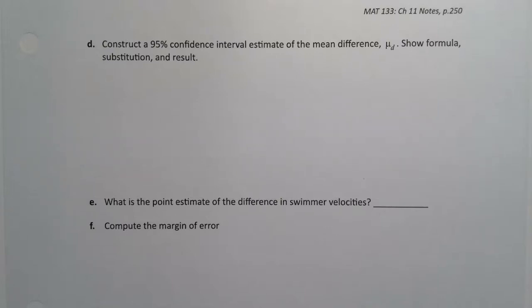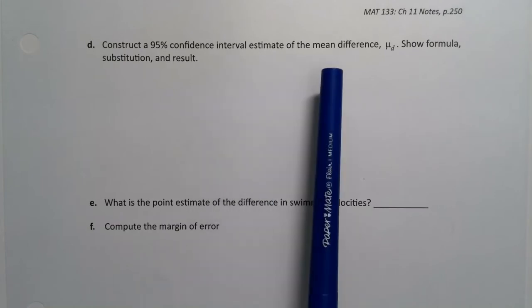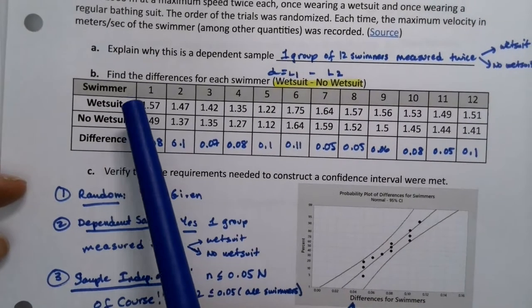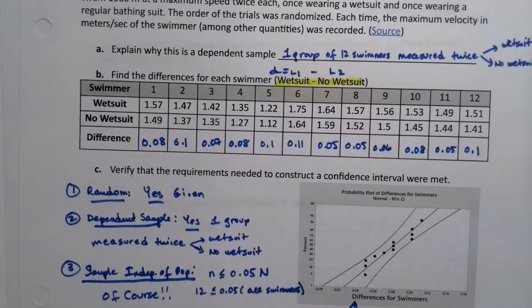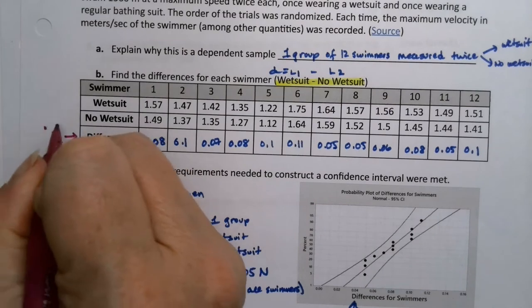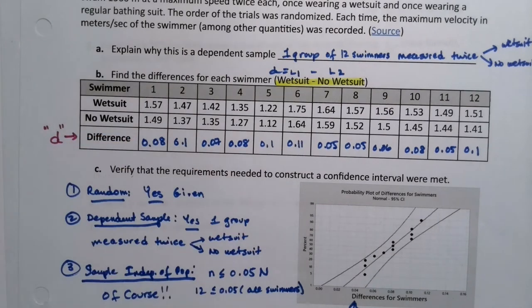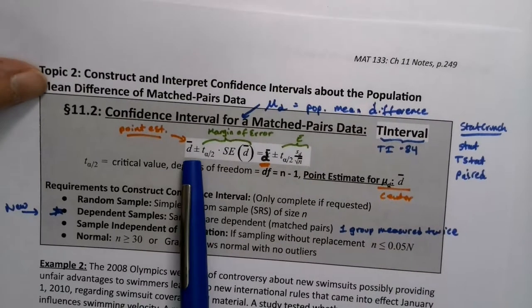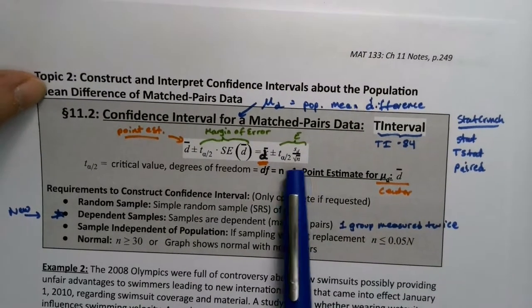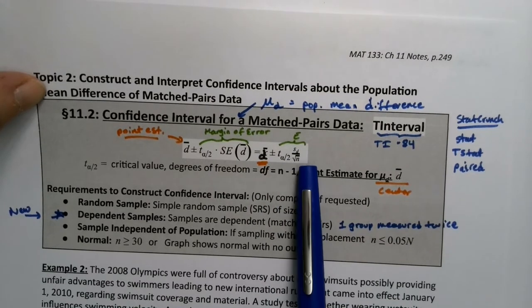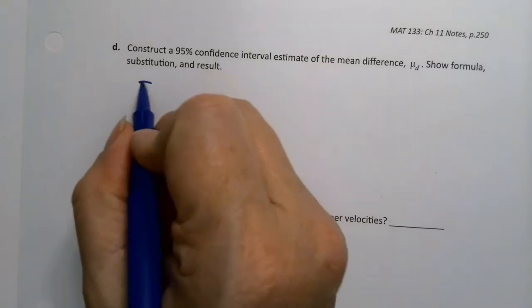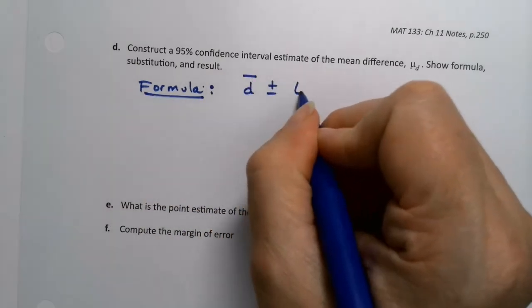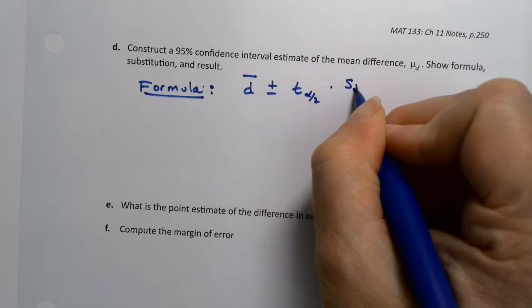As promised in our previous video, we are now to the point where we can construct the confidence interval estimate of the mean difference μ_d. We're going to show the formula, substitution, and result. Remember we have this dataset with the wetsuits and no wetsuits and the differences, the d's, are right here. So we want to construct an interval from those values. The formula is d̄ ± t_α/2 times s_d/√n.